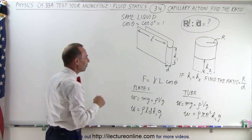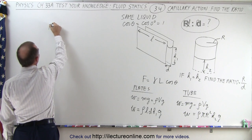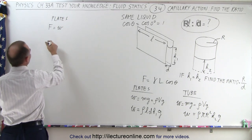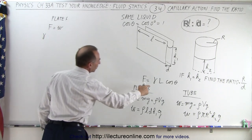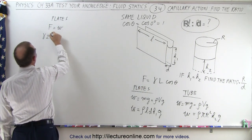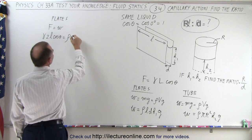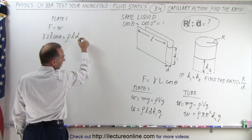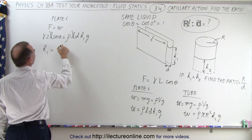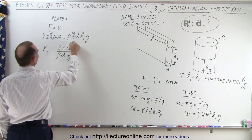Now we can find the height in each case. Setting force equal to weight for the plates: the capillary constant times 2L times cosine theta equals rho times L times D times H1 times g. The L cancels on both sides, giving H1 equals the capillary constant times 2 times cosine theta divided by rho times D times g.